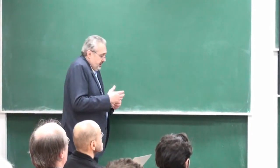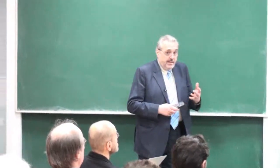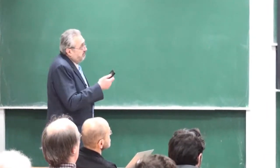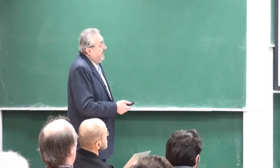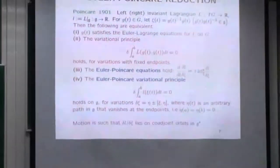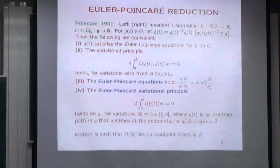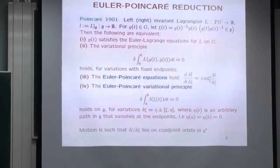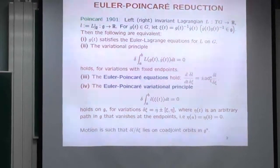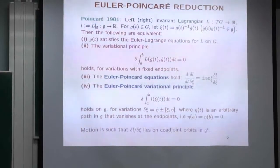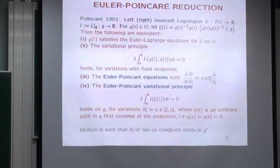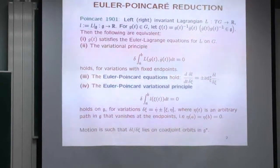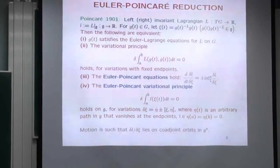This has turned today into an industry. The situation is clearly very special: the configuration space of a mechanical system is a Lie group G, and I have a Lagrangian function on the state space TG. I restrict to the tangent space to the identity — that's my notation for the Lie algebra, written as German G — and Poincaré's statement is that four things are equivalent.